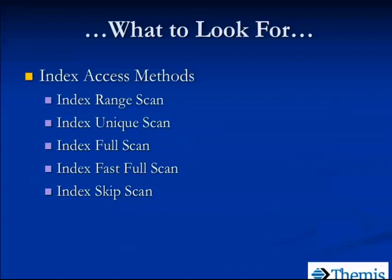There was a question about what's a good size for the PGA. That's a tough one because the PGA is shared by all the processes on the system. The DBAs will think about: at any one point in time, for all my concurrent processes, how many of them are going to be doing sorts? Things that can cause a sort include order by, group by, distinct, creating indexes, certain types of joins like sort merge, and set operations like union, intersect, or minus.